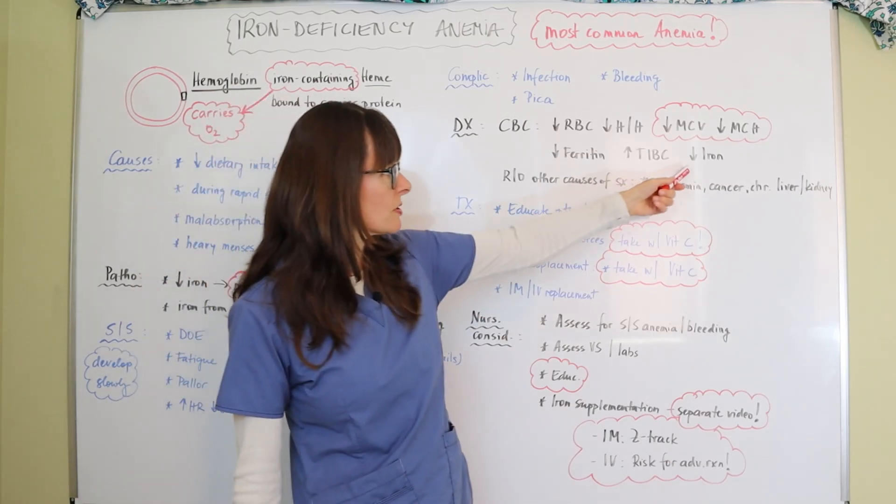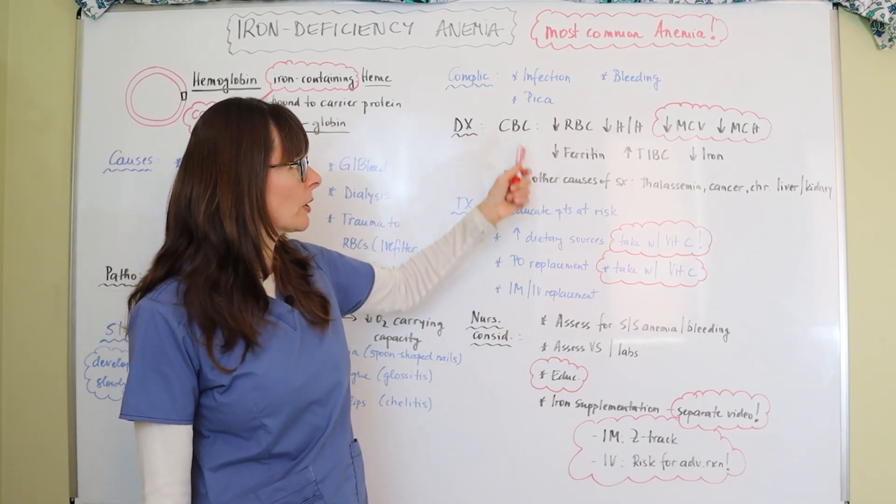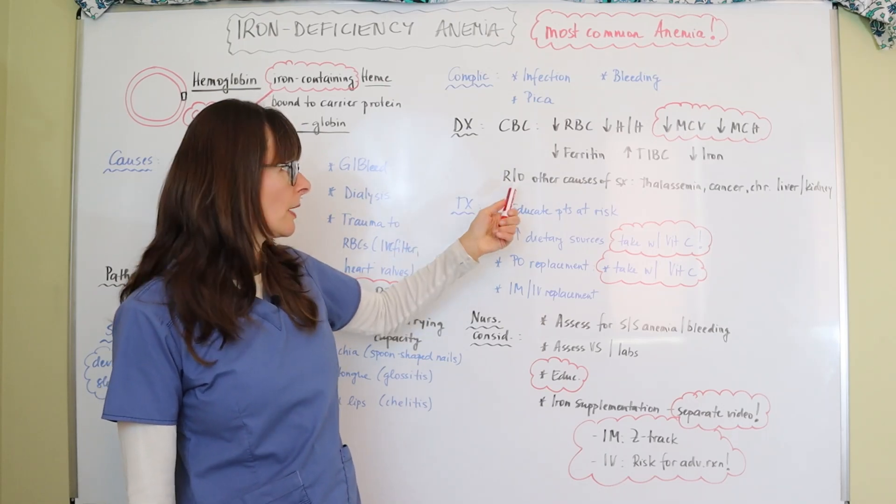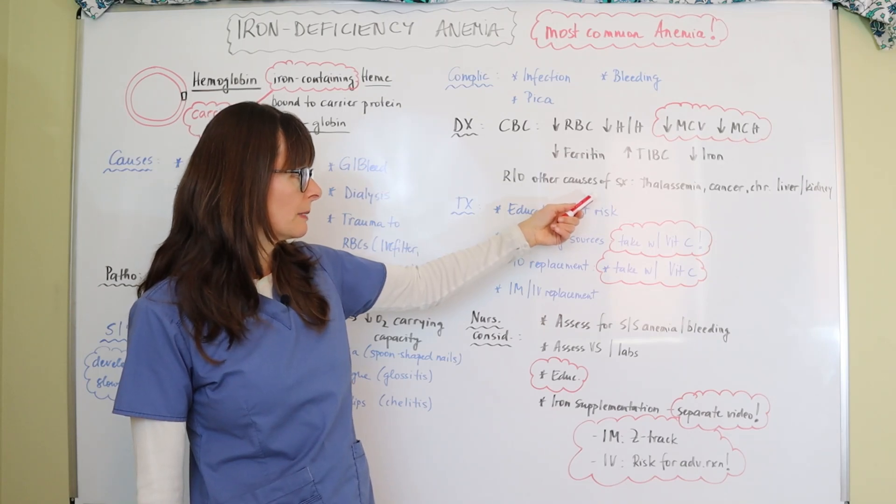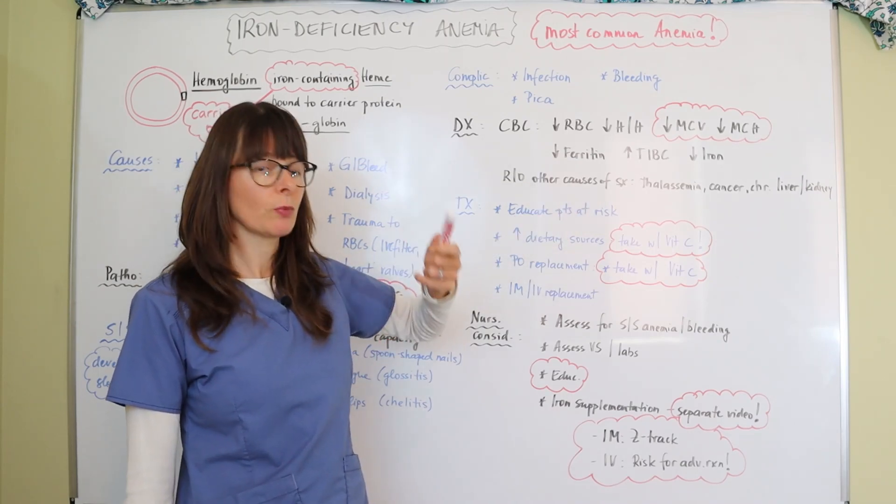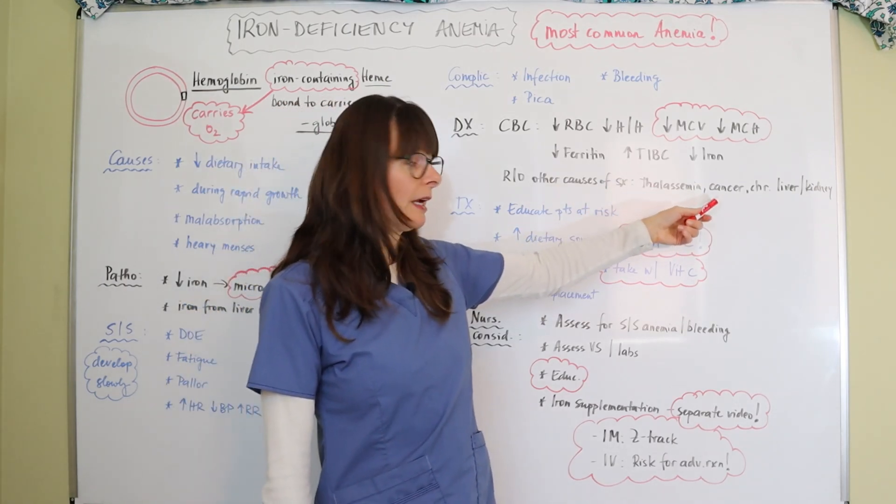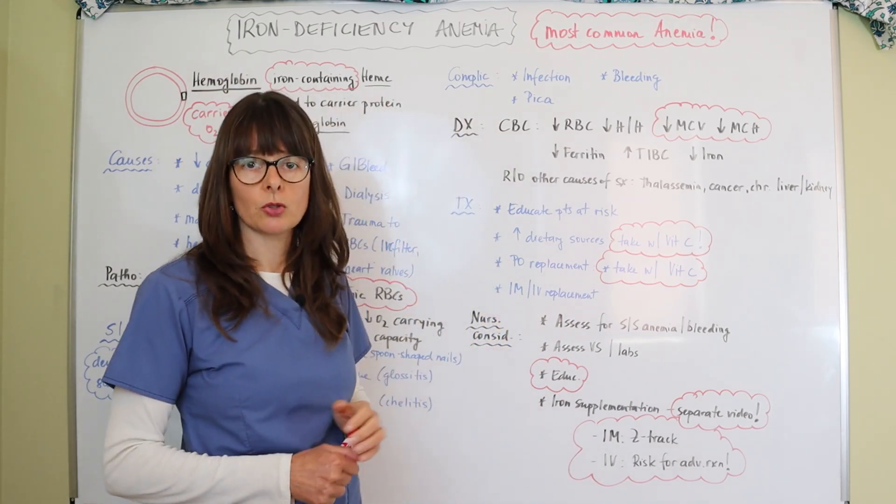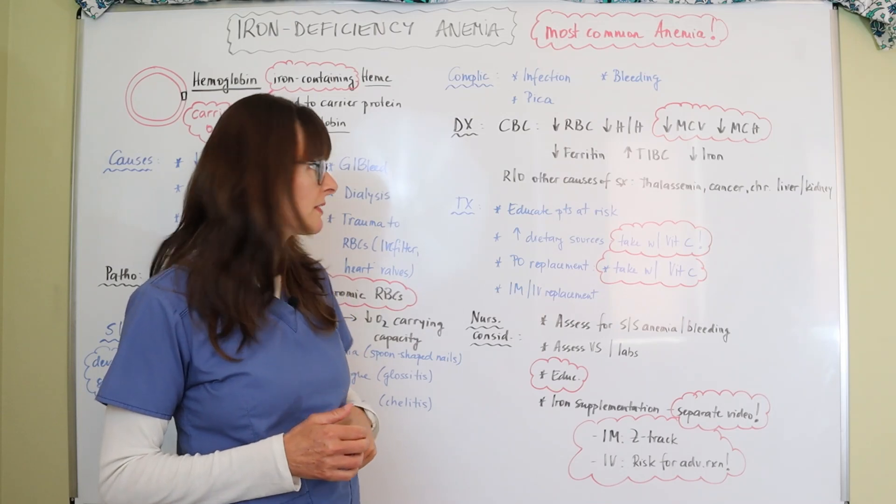Not only are we going to look at these red blood cell indices but we're also going to have to look out and rule out other causes of the symptoms that the patient is experiencing which may be thalassemia which is another type of anemia, any kind of cancer, and any chronic liver and kidney disease because we know those are involved with producing and recycling the red blood cells.